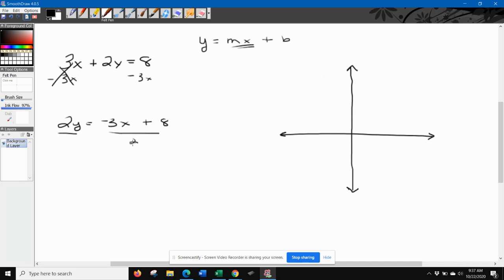Then divide everything by 2, and y is going to be negative 3 divided by 2. It's going to be best to leave it in this form, plus 4. All right, now that we have that, it looks like y is equal to mx plus b.